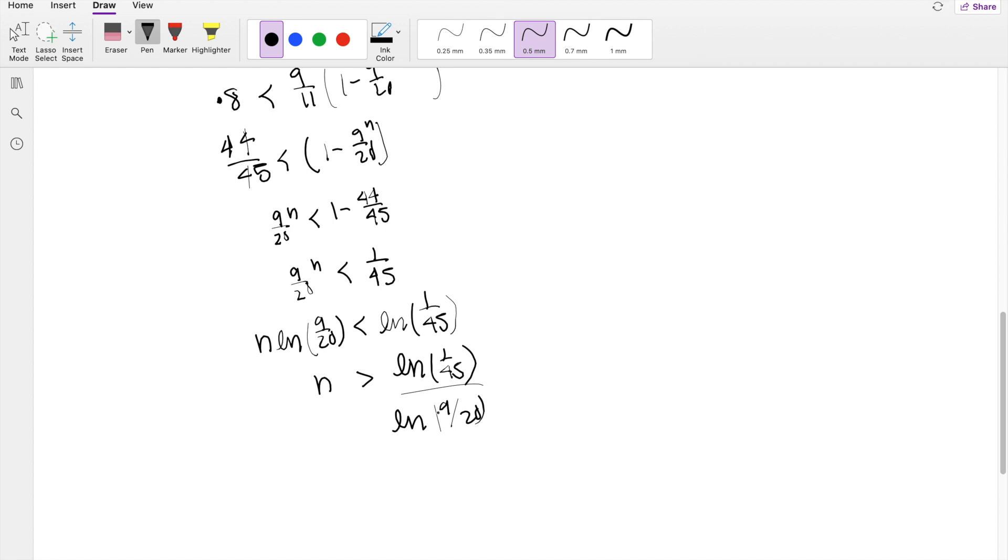We switch the signs whenever a value is negative. Inside a natural log, if it's less than 1, we know that value is going to be negative, so that's why we have to switch the sign.